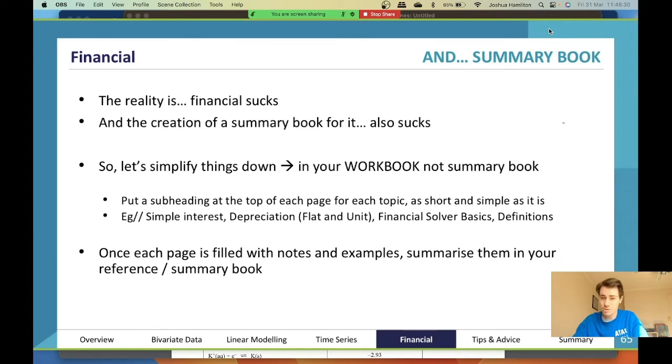I'm going to simplify things down because for your summary book it's really difficult. For your summary book, first of all do it in your workbook. Each time you do a topic, make it a subheading like simple interest, then write down all the information. Then do depreciation, financial solver, definitions, etc. Once each page is filled out with notes and examples, summarize it into your reference summary book. I want you to do that so you have the basics.